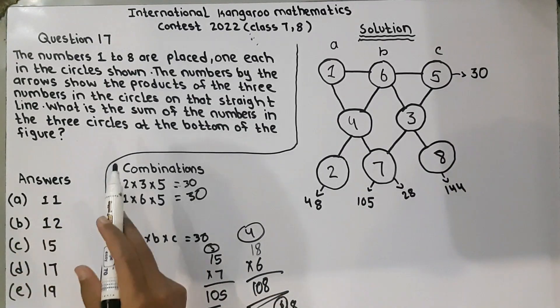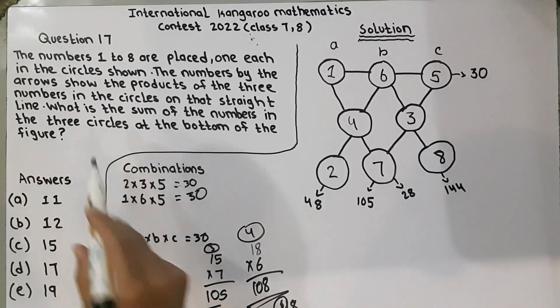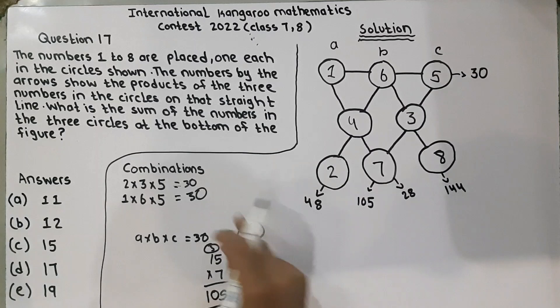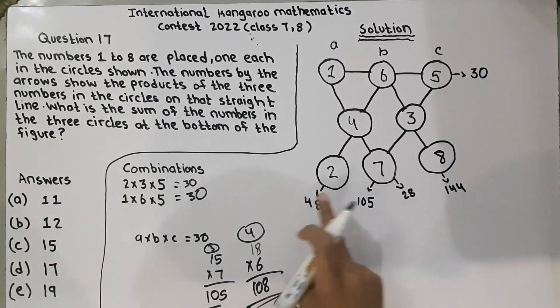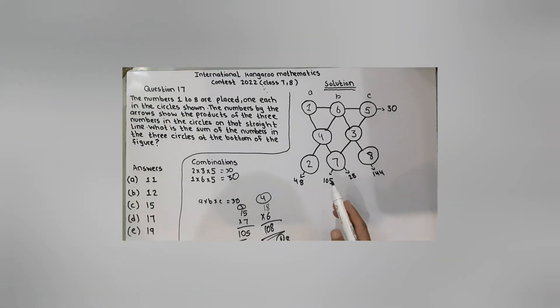And, in the end, he said that what is the sum of the three numbers in the three circles at the bottom? These three circles of the figure. Now, we have to plus these three numbers. 7 plus 2, 9. And, 2 plus 7 plus 8. 7 plus 2 is equal to 9 plus 8. 9 plus 8 is equal to 17. So, 17 is the required answer.